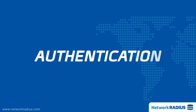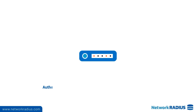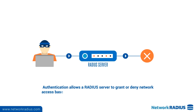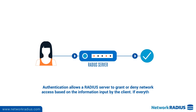Authentication allows a Radius server to grant or deny network access based on the information input by the client. If everything checks out, the server grants the client access to the network.